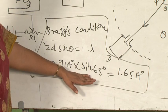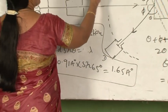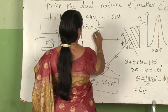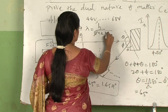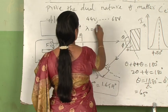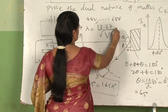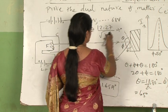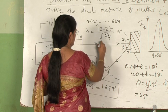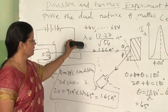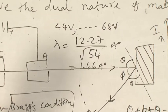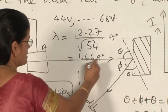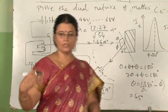Substituting the de Broglie formula for electrons — λ = 12.27 / √V angstroms — with the accelerating potential V equal to 54 volts, the theoretical wavelength is calculated to be 1.66 angstrom units. Comparing the two values: the experimental value is 1.65 Å and the de Broglie theoretical value is 1.66 Å. Since only the second decimal place differs, these two values are in very good agreement.